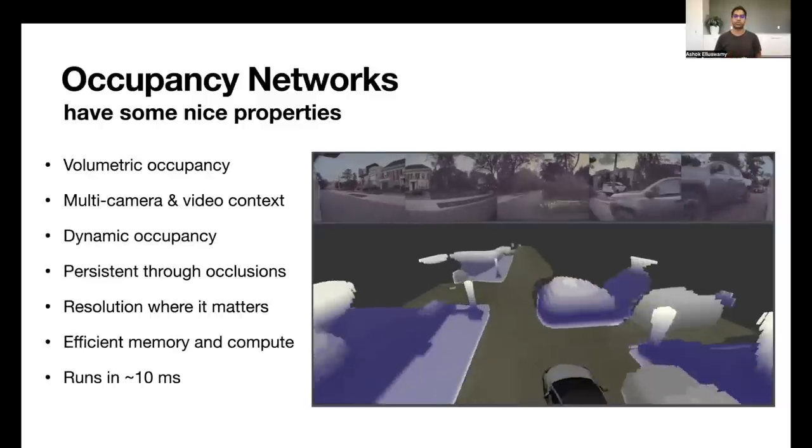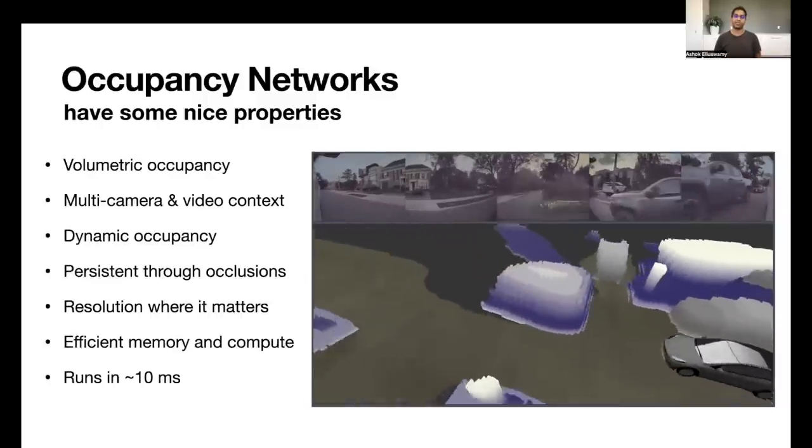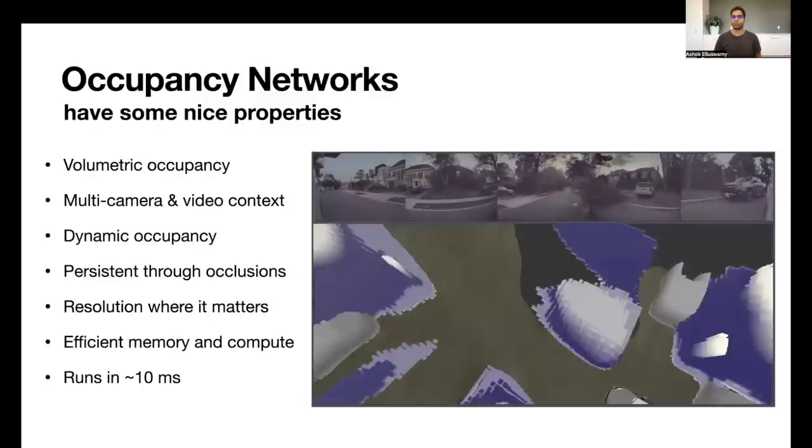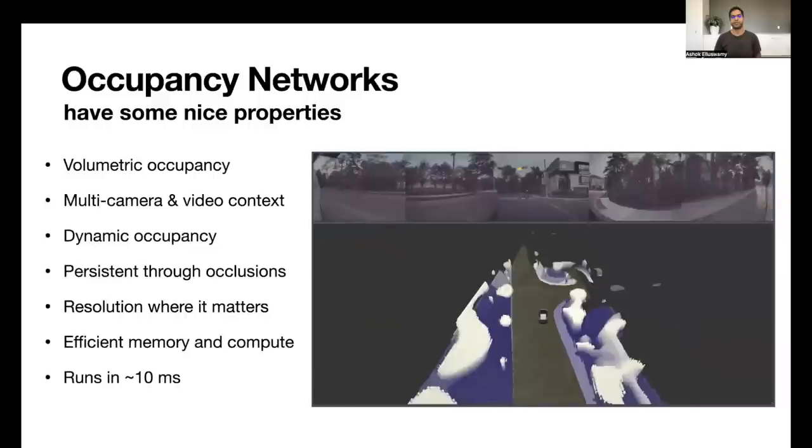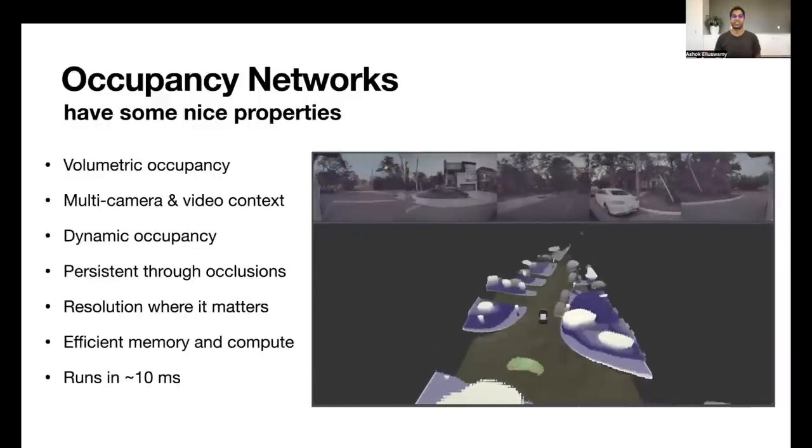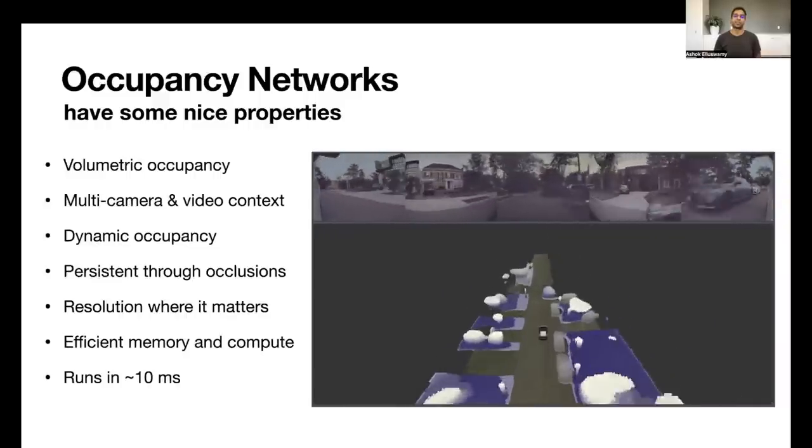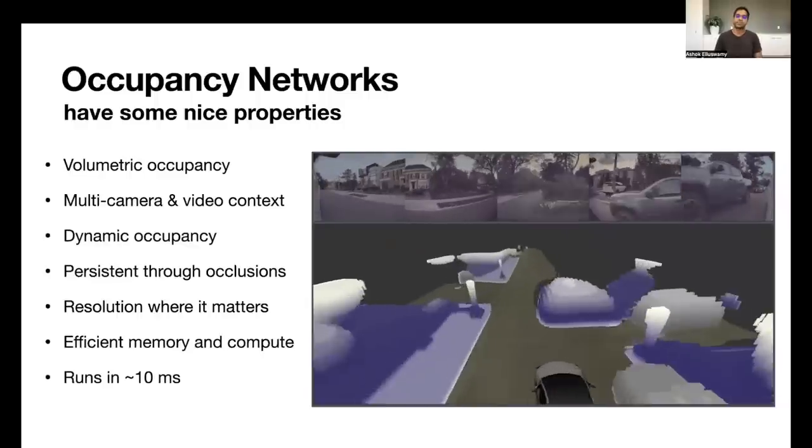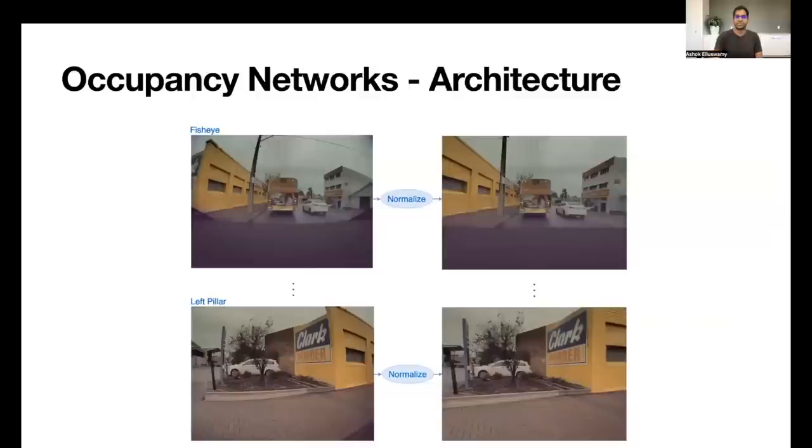The networks that I'm showing here, for example, run within 10 milliseconds on our compute platform. This enables the network to be run at 100 hertz, which is much faster than what the camera even produces the images at. So how is this done? Let's take a brief look into the architecture.